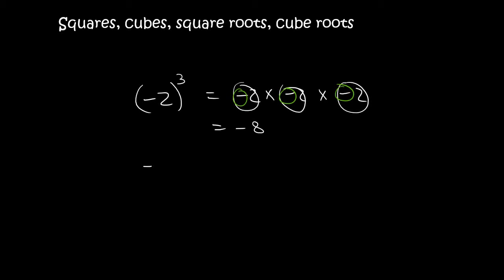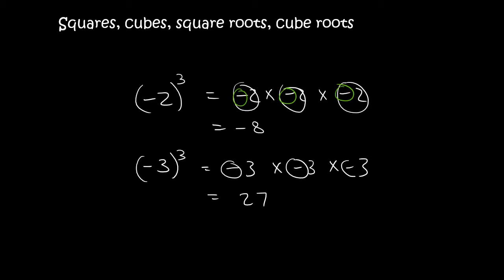If you have minus 3 to the power of 3, that means minus 3 times minus 3 times minus 3. So 3 times 3 is 9, times 3 is 27, and then there are 1, 2, 3 negatives. Three negatives makes a negative.